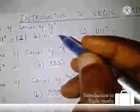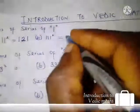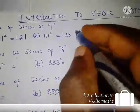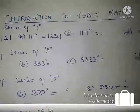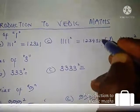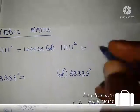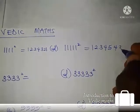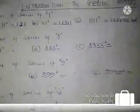For 111 squared, how many ones do we have? We have three digits, so it's going to be 1, 2, 3, then descending: 2, 1 — so the answer is 12321. For a four-digit series, it's 1234321. For five digits of ones, it's 123454321. You can cross-check this using your calculator — mathematics calculations are very simple!